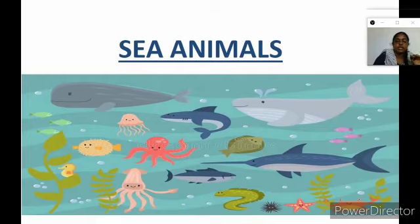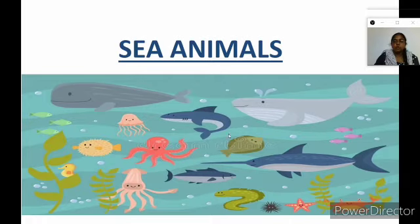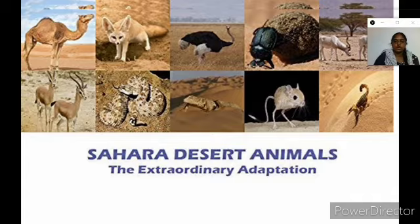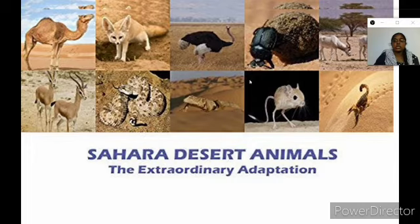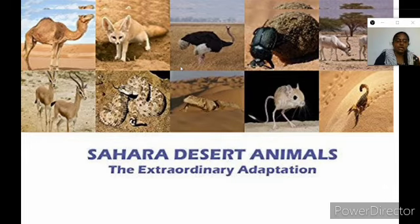And the next one, sea animals. Inside the seawater, we have so many animals like whale, shark, jellyfish, starfish, and octopus. All these are called sea wild animals. And we also have desert animals. The desert is a very hot place that is full of sand. The camel, ostrich, scorpion, rat, mouse, snakes, and some deer — all these animals are living in the desert. So you understand that not only in the forest, but also in grassland, in the polar region, in the desert, and even in the sea, wild animals are living.